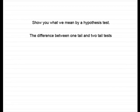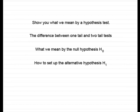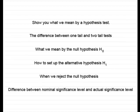Hi, welcome to this tutorial on hypothesis testing for the Poisson distribution. In this tutorial what I hope to show you is what we mean by a hypothesis test, the difference between one tail and two tail tests, what we mean by the null hypothesis H0, how to set up the alternative hypothesis H1, when we reject the null hypothesis, and finally the difference between nominal significance level and actual significance level. So let's get started then.